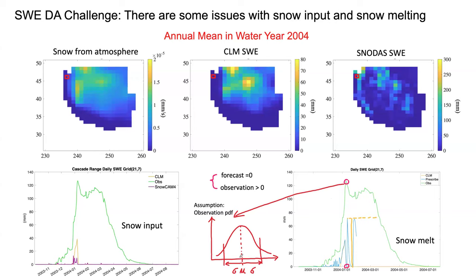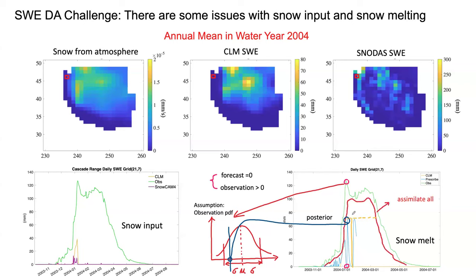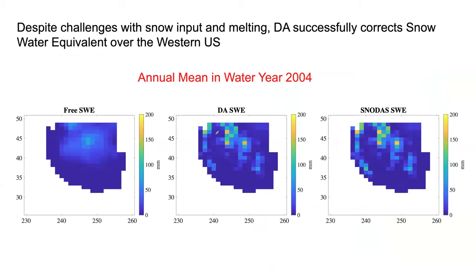We assume the observation follows a normal distribution, and we randomly sample from this distribution to get our value, then assign that value as the posterior. This also gives us a chance to say: if we create snow, we really want to keep that snow from melting, so we tune another option to assimilate all of them in order to keep the snow. This is the result over the western United States — this figure shows what the SWE actually looks like, and this is our result from implementing those two options in DART.